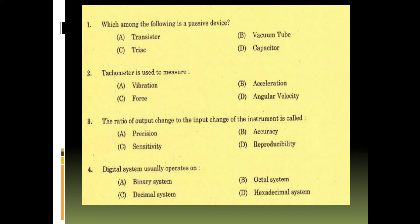First question: which of the following is a passive device? What is passive component and what is active component? Active components deliver power or energy to the circuit. Passive components utilize power or energy from the circuit. Active examples: transistor, SCR, integrated circuits. Passive examples: resistor, capacitor, inductor. What is the passive device? Transistor, vacuum tube, triac, capacitor. What is the answer? Option D - capacitor. Passive device, okay?